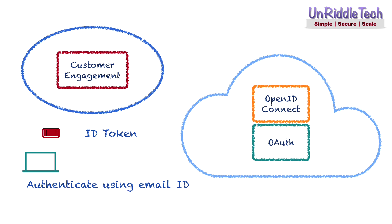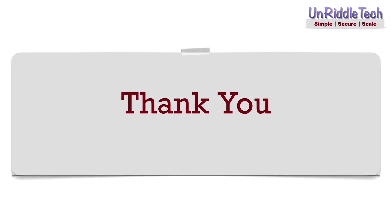The difference is that the OAuth server may now perform authentication and provide the application with one more token called an ID token, along with the access token. The application may present the ID token to get more information about the user after successful authentication. By this method, the customer engagement application can leverage OAuth services provided by the email provider to authenticate customers, so you may not have to focus on managing user accounts. Instead, you can focus on developing features for engaging customers. I hope you understood the basic concepts that may help to manage identities.